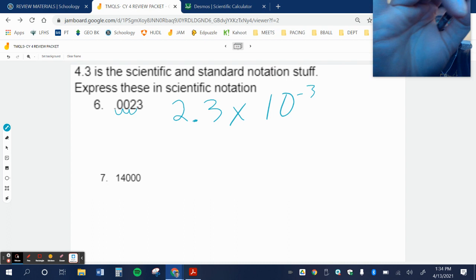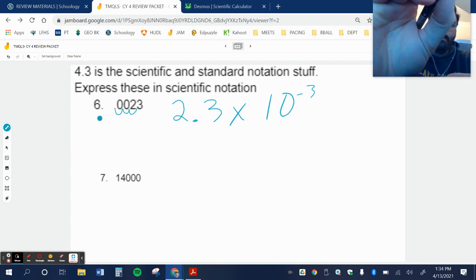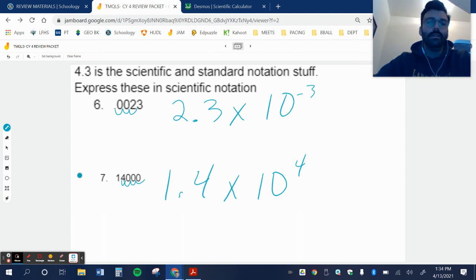All right, when I start with a large number like 14,000, that means I'm going to have a positive exponent. But I'm going to move my decimal one, two, three, four times, so 1.4 times 10 to the fourth power. The other ones are very similar to this, that's why I just did these two.